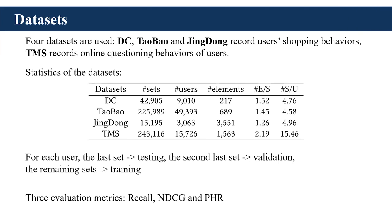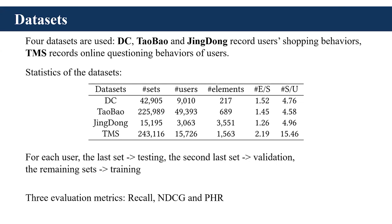That's a good question. In the current version of our work, we just use Recall, NDCG, and PHR to evaluate our model without considering the number of elements in the ground truth set. I think it's more reasonable to consider the actual number of elements in the ground truth set. I have seen some papers that predict the number of elements in the set instead of the actual elements. We can leave this for future work — perhaps a multitask model with multiple objectives to learn both which elements and how many elements will appear in the next set.